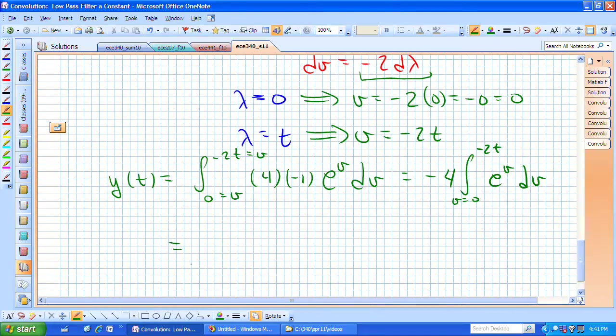That's now easy for me to integrate. That's just e to the v, and I evaluate that at v equals 0 up to v equal minus 2 t.